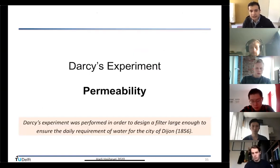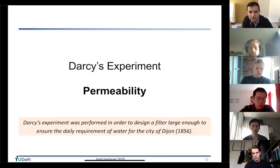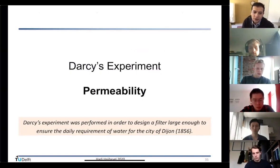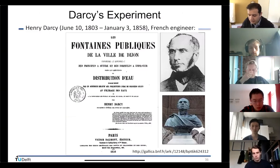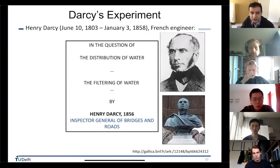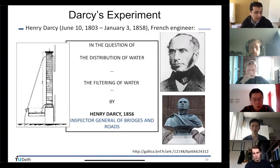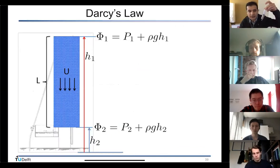The second extremely important parameter is permeability of porous material, which was initiated by Darcy's experiment for the daily water requirements of the city of Lyon in France. We replicated this setup ourselves, and we defined the important parameter of potential — thermodynamic pressure plus ρgh — where h is elevation with respect to a reference level.